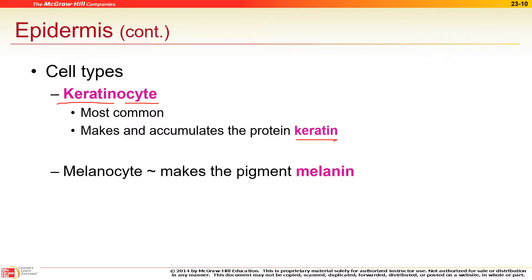Melanocytes produce the protein melanin, which gives you your pigment. There are different colors of melanin — black, brown, red. Your skin color or complexion is not based on the number of melanocytes you have, but how active they are. We all have the same number of cells that can produce pigment, but some people's melanocytes make more and others make less.